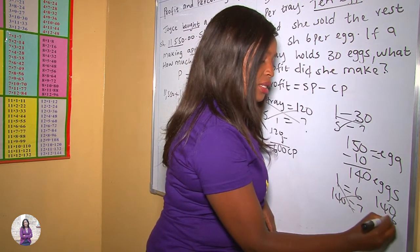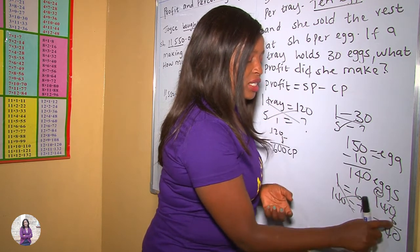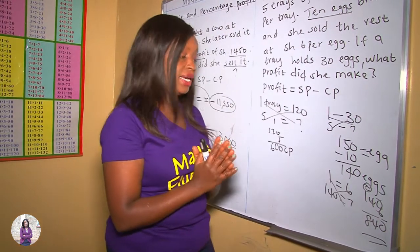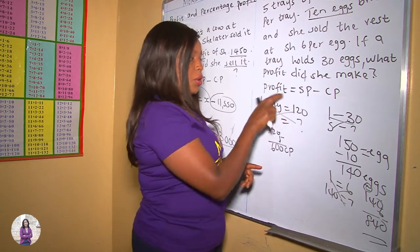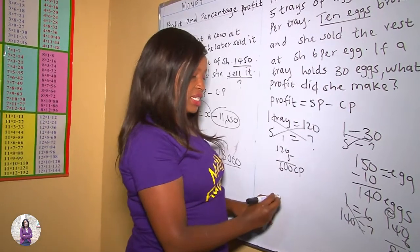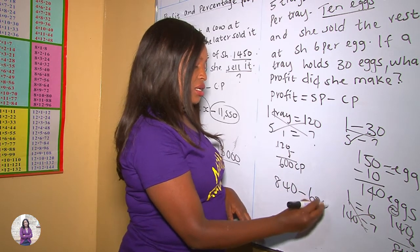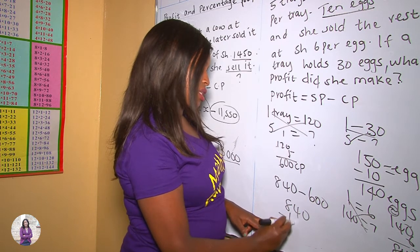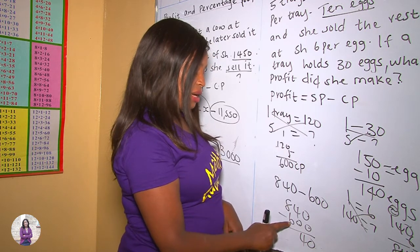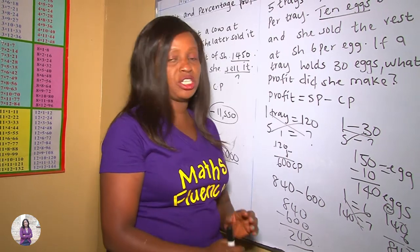Now let's get the profit. Profit equals selling price take away cost price: 840 take away 600. Working through: 0 take away 0 is 0, 4 take away 0 is 4, and 8 take away 6 is 2. Therefore, the profit was 240 shillings.